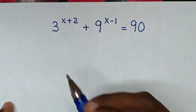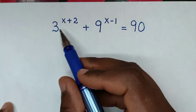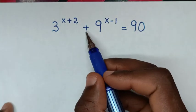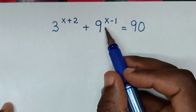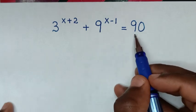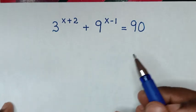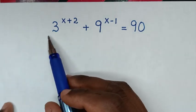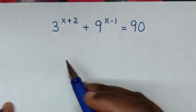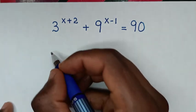Hello. How to solve 3 power of x plus 2 plus 9 power of x minus 1 is equal to 90. To find the value of x from this equation.